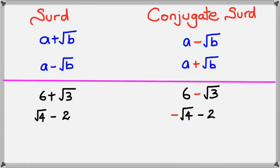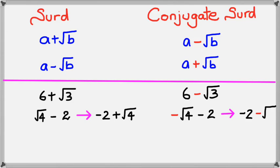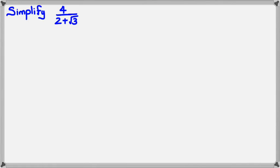Because if you look at square root of 4 minus 2, we can actually rewrite this as negative 2 plus square root of 4. Therefore the conjugate surd of this would be negative 2 minus square root of 4. Okay, let's go through some examples just to get the idea a bit more.